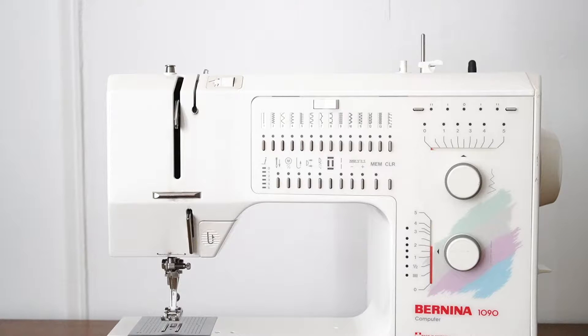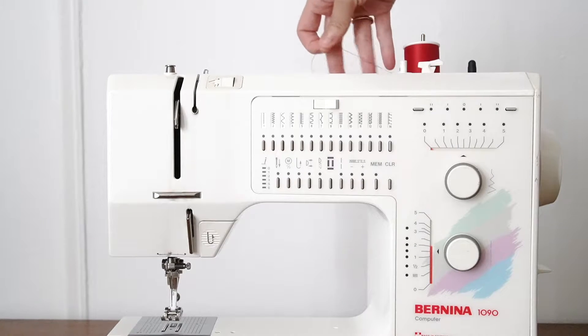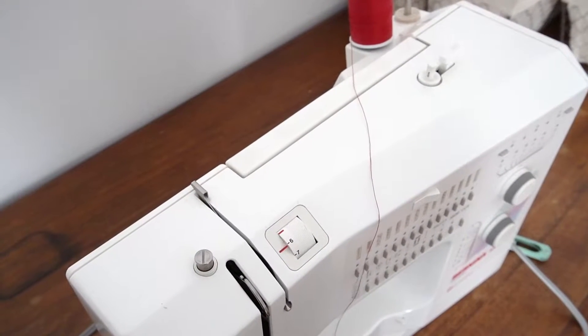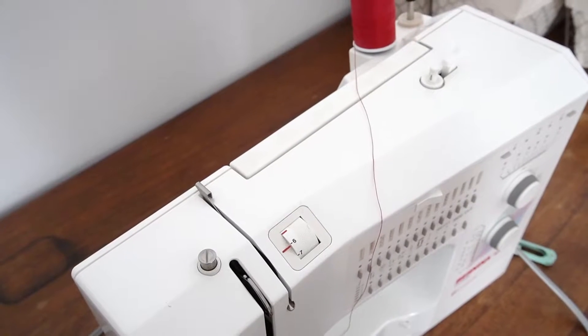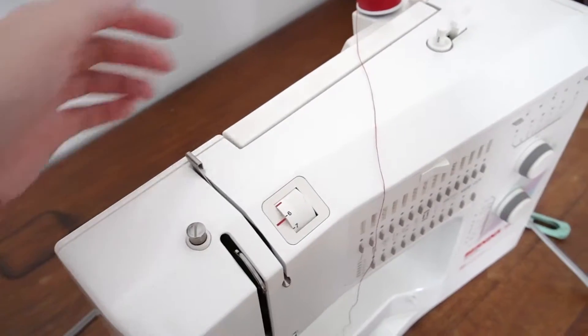First, insert your thread onto the thread holder with the thread coming from the back of the spool. Your machine might be a little bit different so you can always refer to your owner's manual for your machine to figure out how to thread it, but I will show you this one because they're basically all the same.